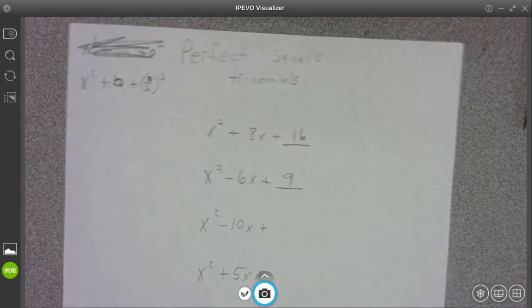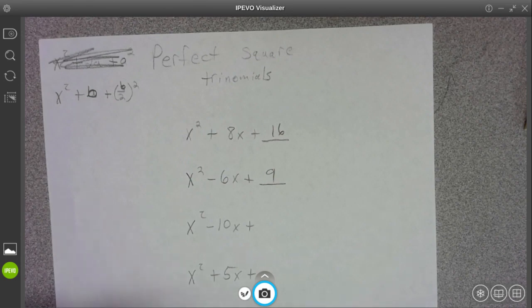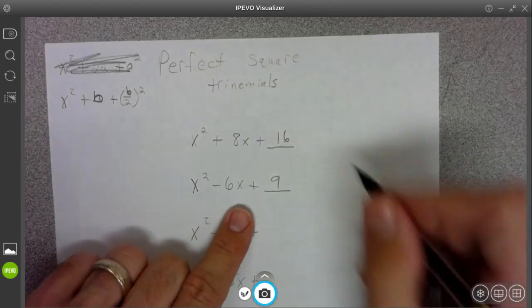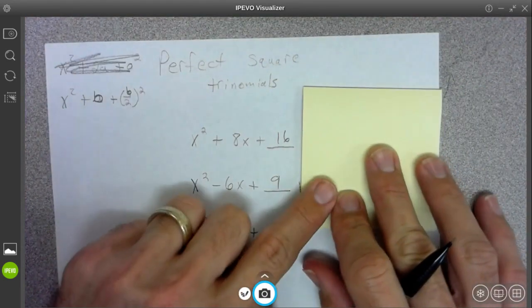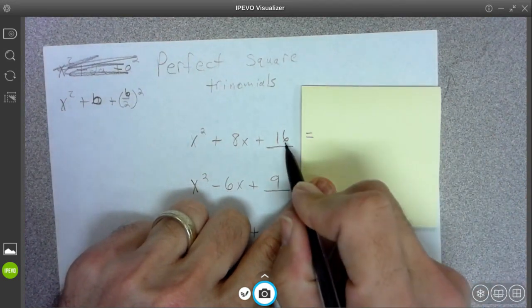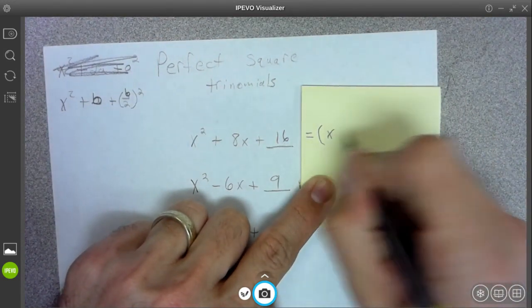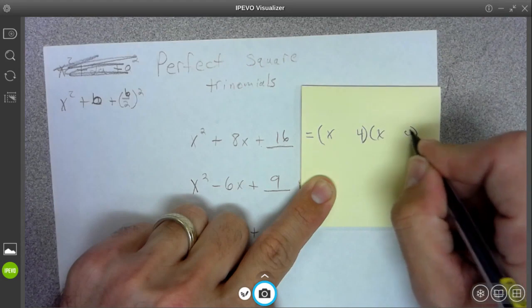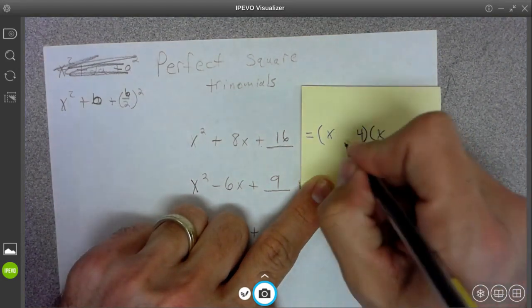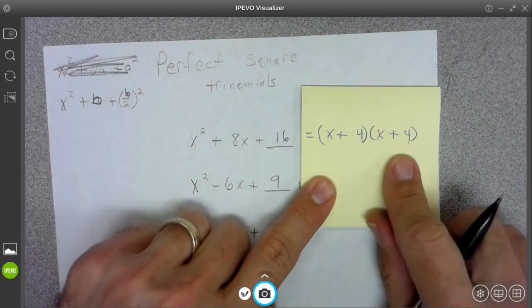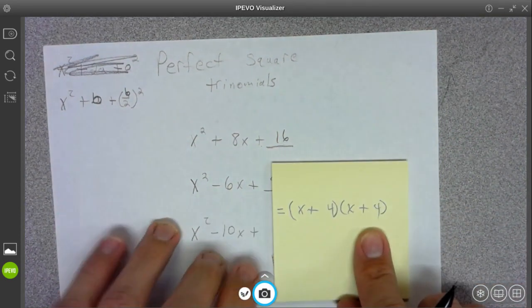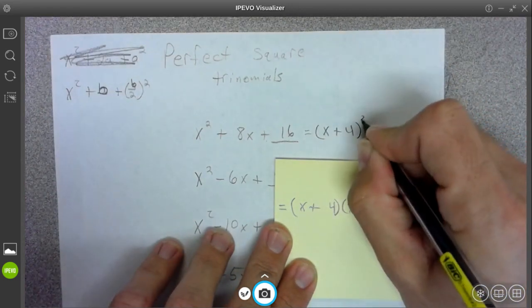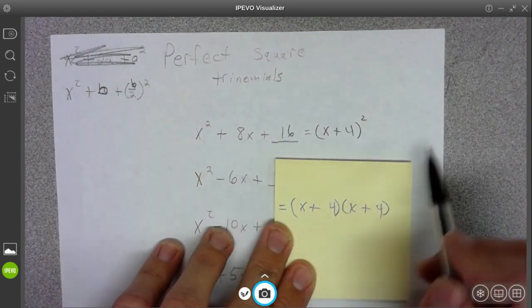Now the reason that this is special is because of the way that it factors. These are called perfect square trinomials. When you go to factor this, actually I'm going to write it out on here. When you go to factor it, you need to find two numbers that multiply to 16 and will add up to 8. So you get plus signs in the middle, but you have a repeat factor.